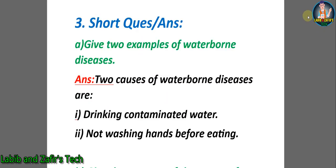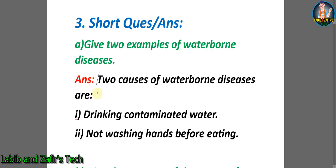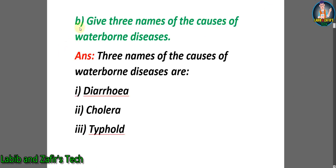Now let's go through some short question answers. A) Give two examples of waterborne diseases. Answer: two causes of waterborne diseases are — number one: drinking contaminated water, number two: not washing hands before eating. B) Give three names of the causes of waterborne diseases. Answer: number one: diarrhea, number two: cholera, number three: typhoid.